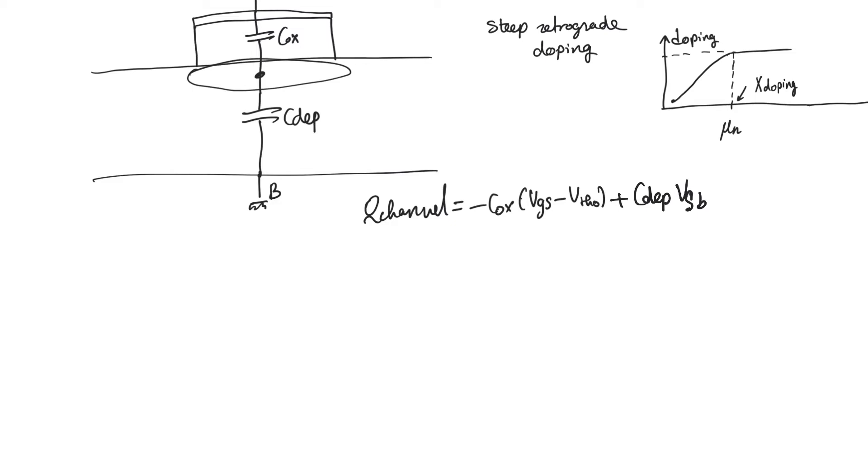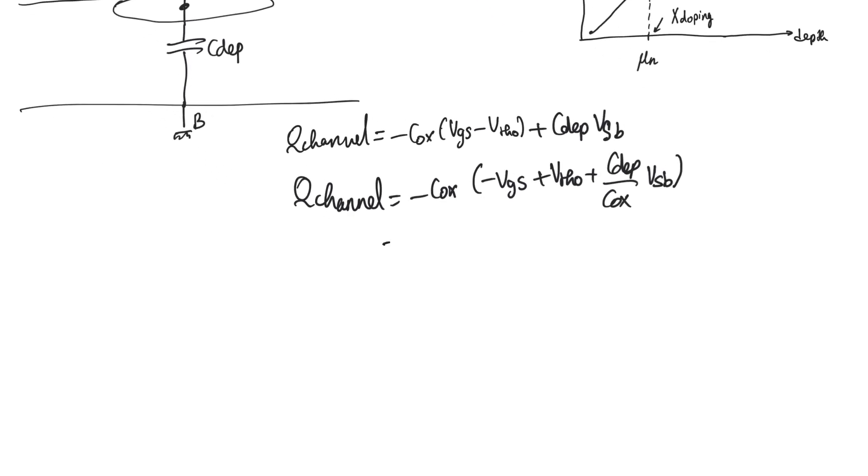But we do know that the charge in the channel is going to be equal to minus C-oxide into minus Vgs plus V-threshold. So this means that V-threshold is equal to V-threshold naught plus C-depletion divided by C-oxide into VSB.